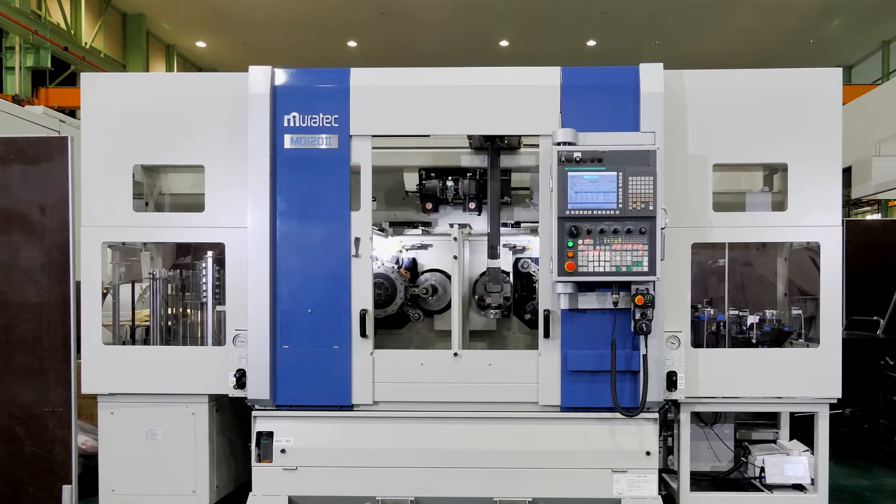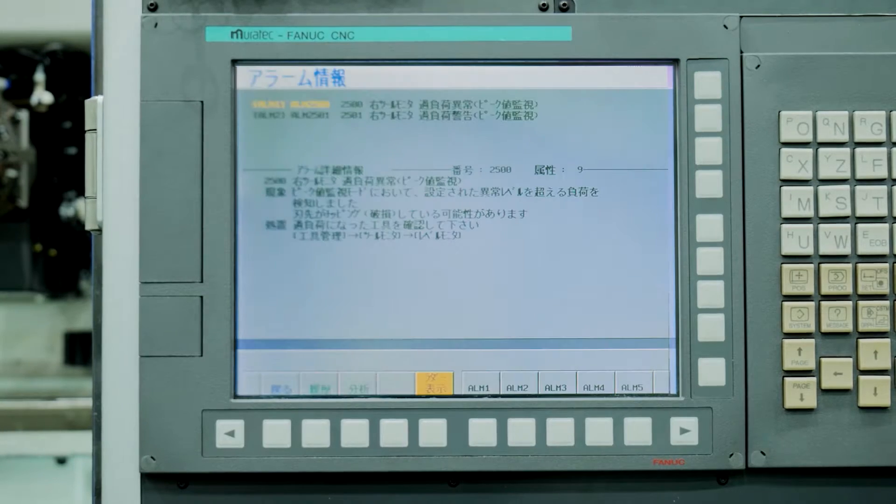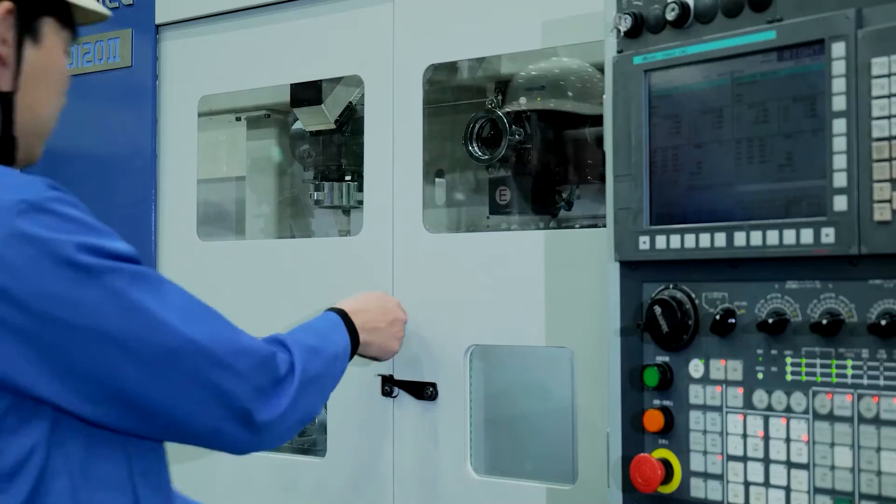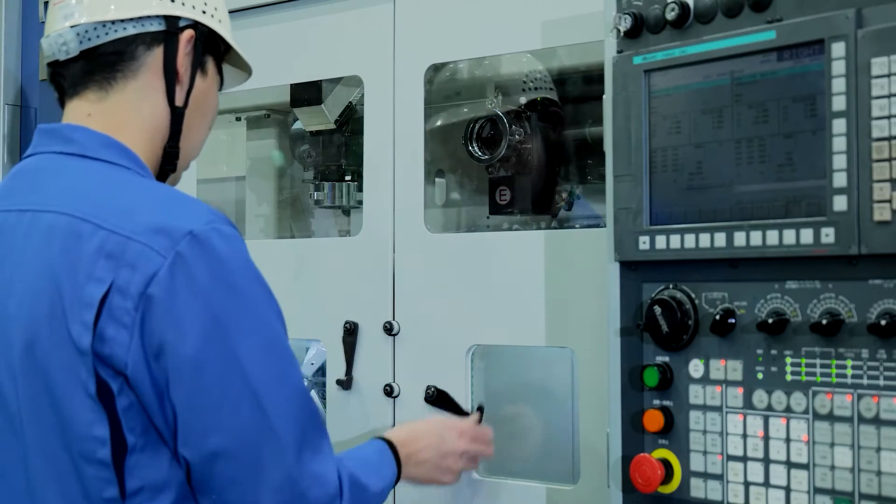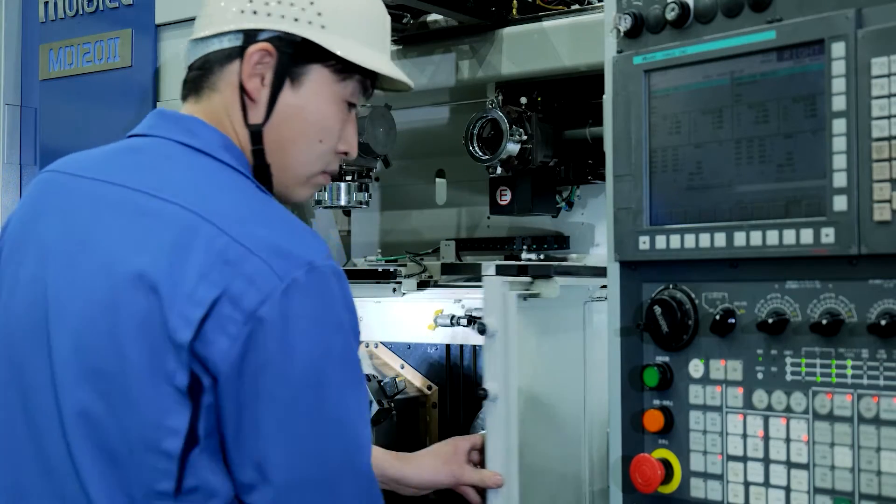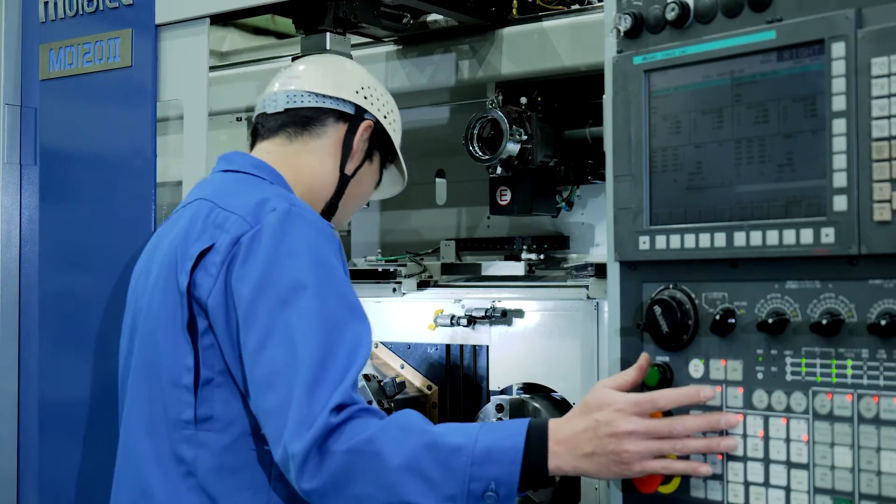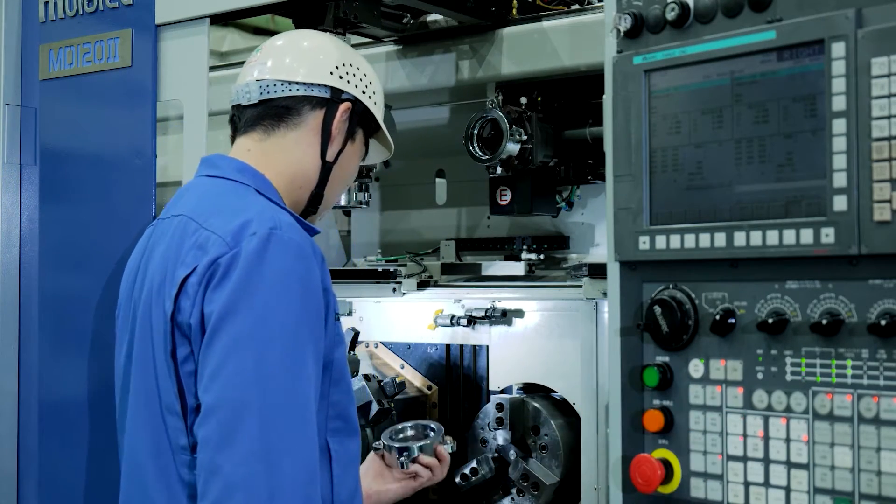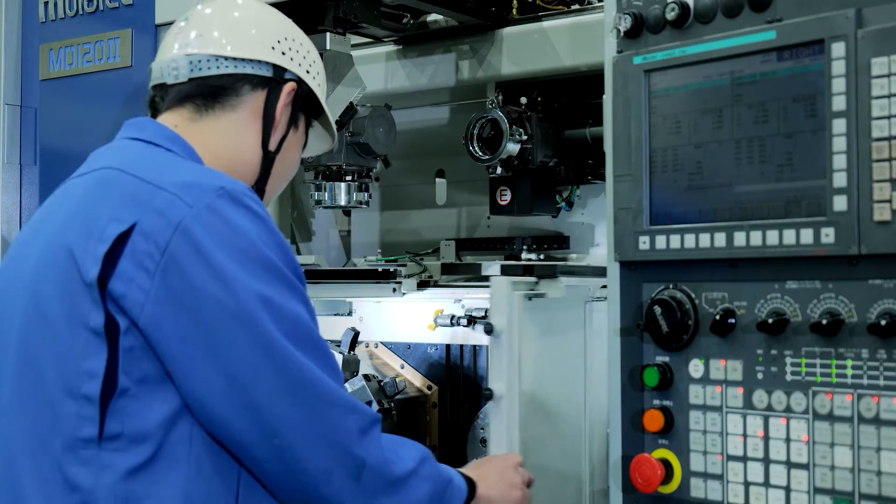The most significant feature of the gantry loader is that it allows loader cycles to be restarted from an interrupted position on all models. This feature allows the loader to easily resume automatic operation, even in the event of an irregular or emergency stop.